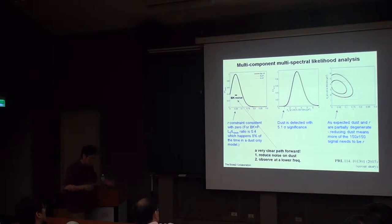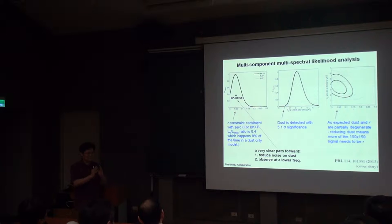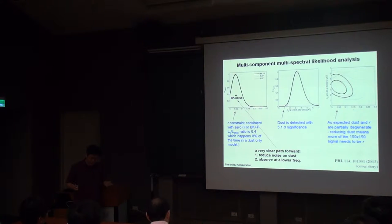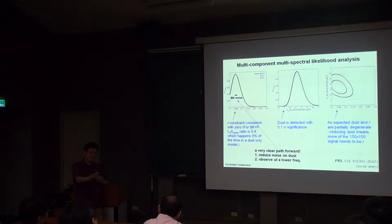We use this method to measure with high fidelity degree-scale B-mode polarization on the sky, and we have this tantalizing likelihood curve that's about to distinguish three extremely important models. If we stay the course and reduce the noise on dust — by making our own measurements at 200 or 300 GHz on the ground, or by observing at lower frequency — when you scale the Planck dust template for subtraction, you multiply by a scale factor before subtracting.